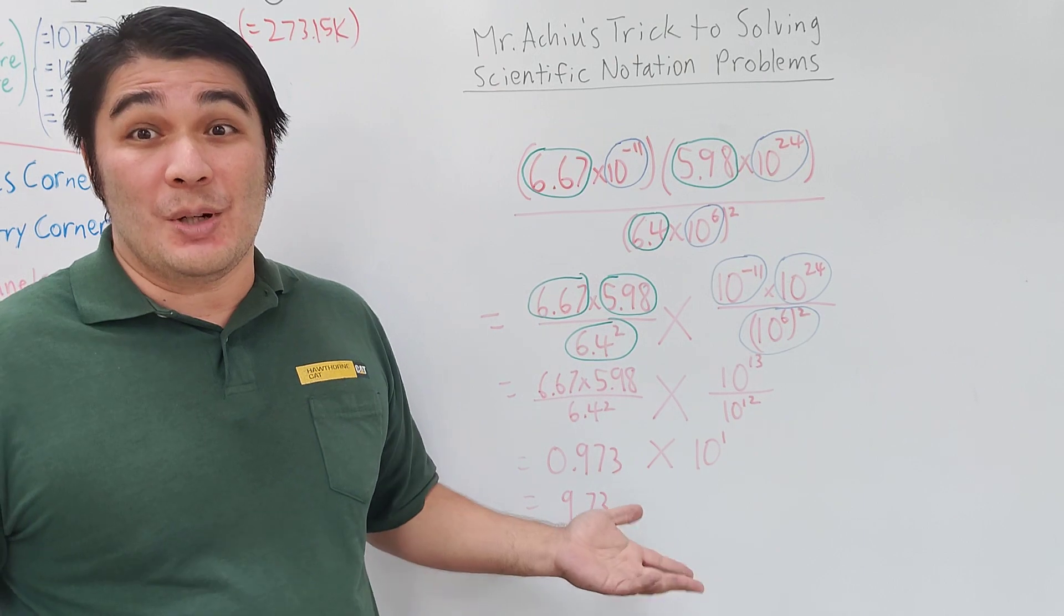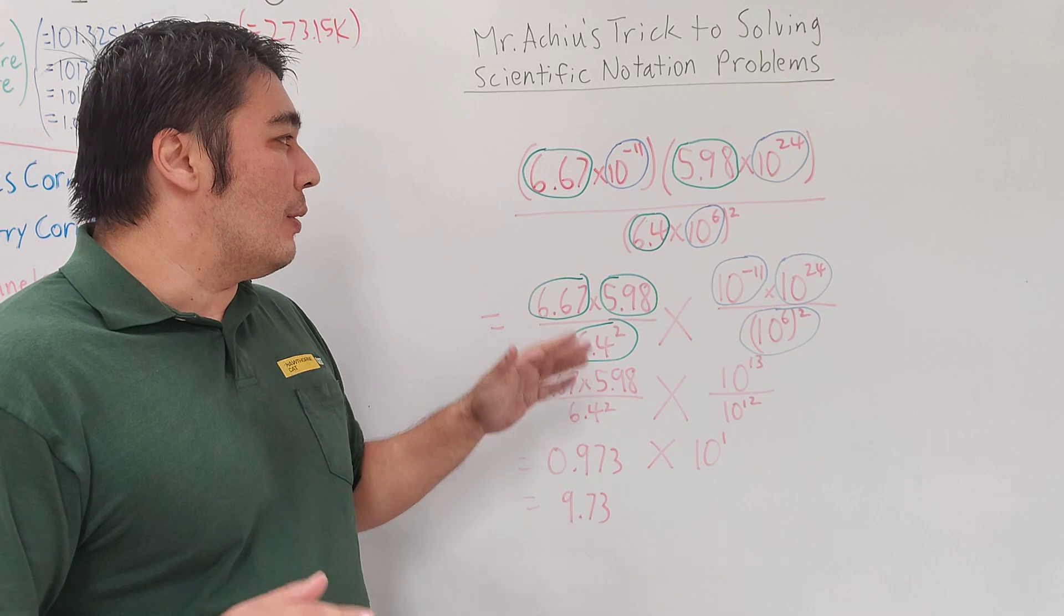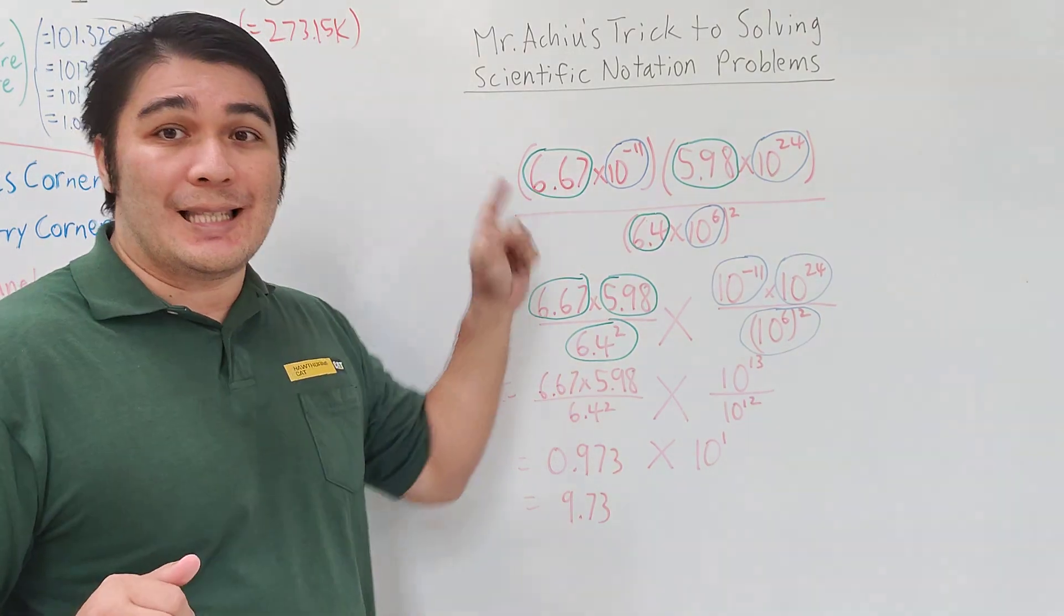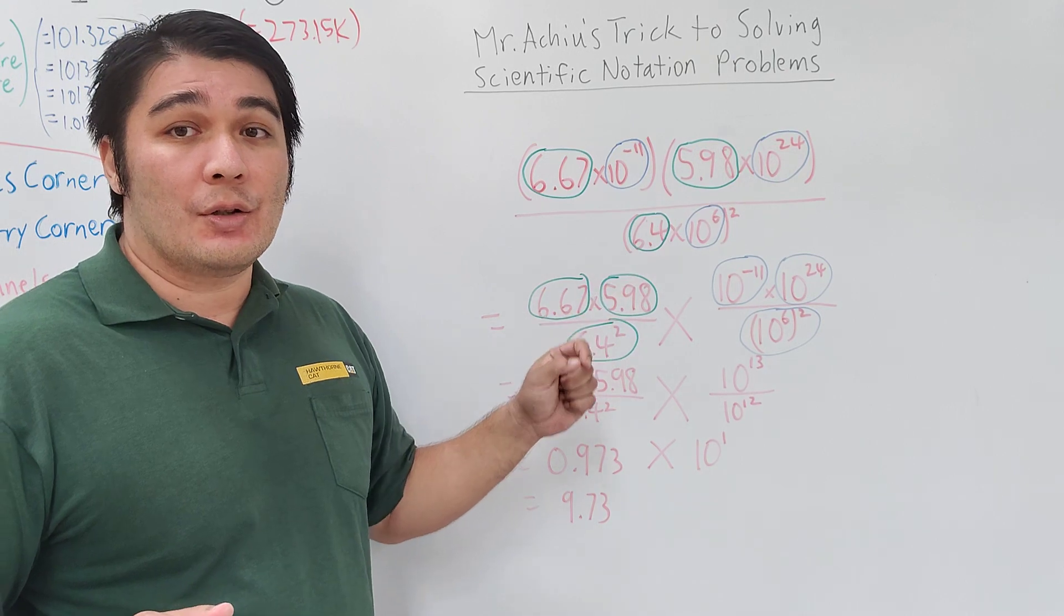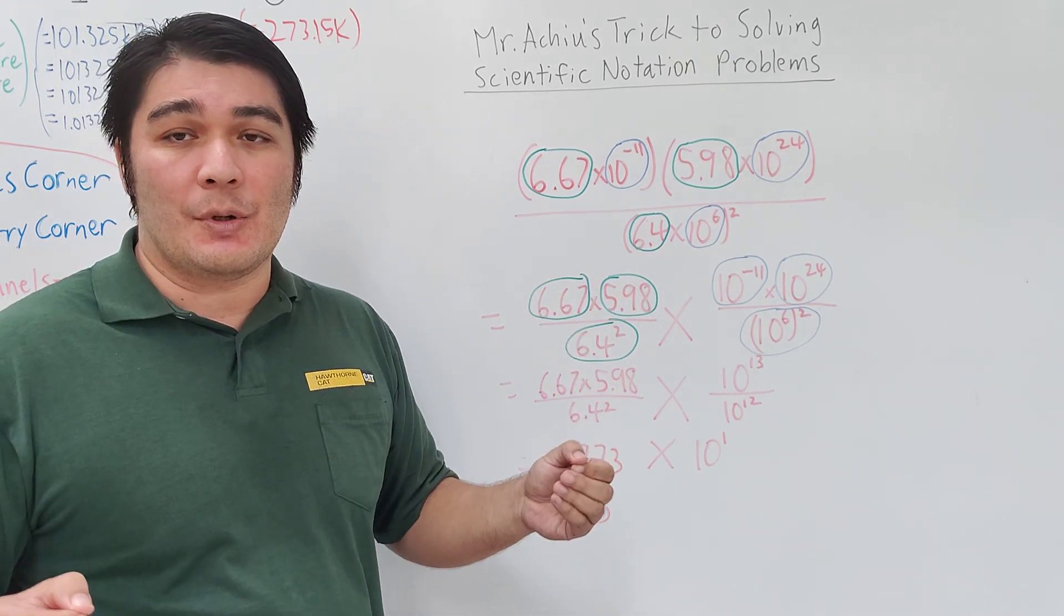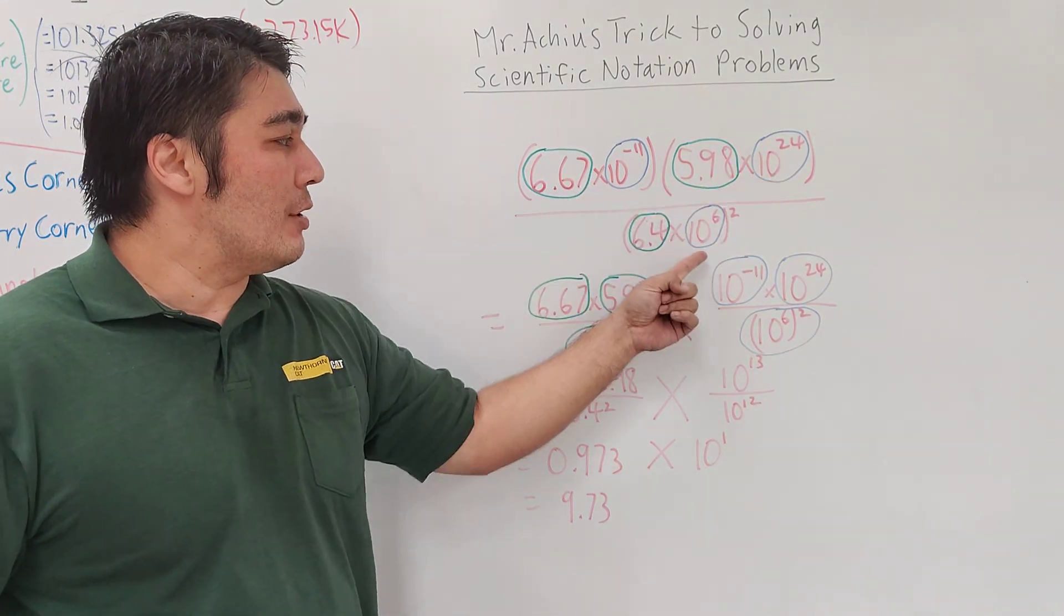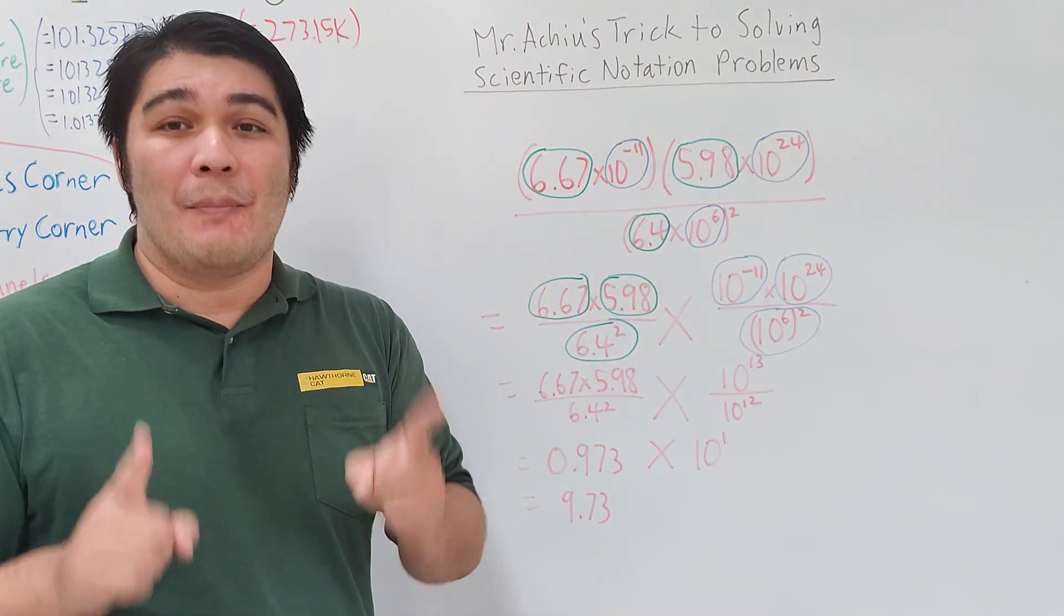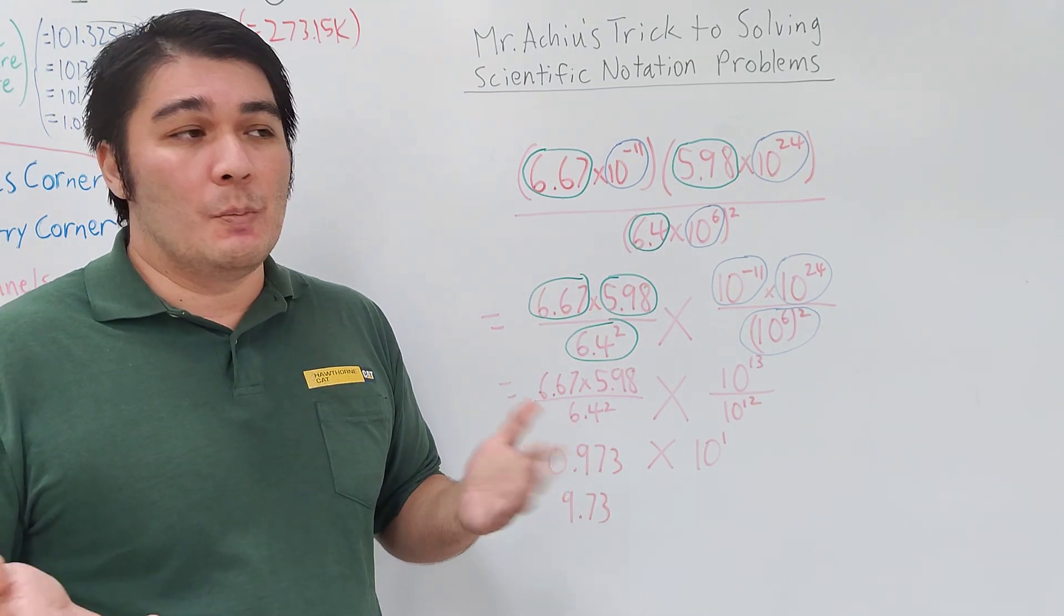How do you deal with something like this? This is where my trick comes in. I circled all the decimal numbers in green, and I circled all the base 10 numbers - 10 to whatever power - in blue. My trick is really not so much a mathematical trick, it's more of